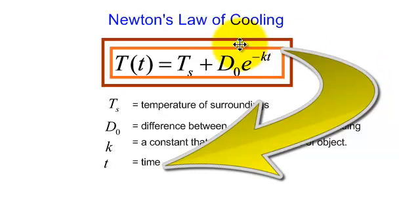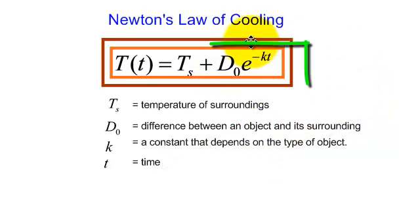Also, notice this part of the formula. T_s, that is the temperature of my surroundings, but the rate at which this item is going to cool down, doesn't that look similar to my PERT formula, P times e to the rt? The K here is negative, but it's cooling down, the temperature is decreasing. Now instead of P, D_0 is the difference between my object and my surroundings.